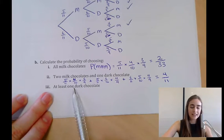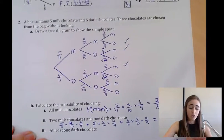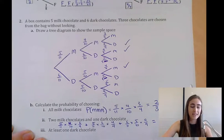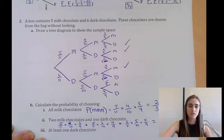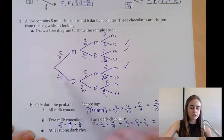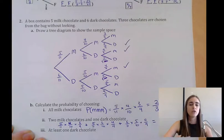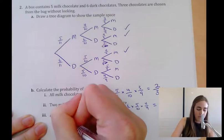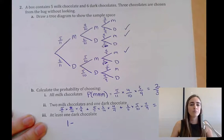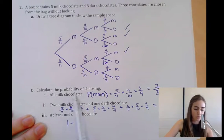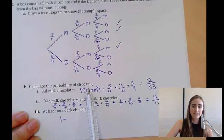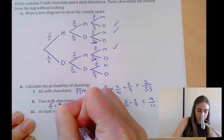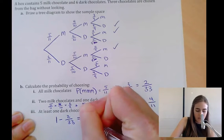Our last question asks for the probability of choosing at least one dark chocolate. This could happen in many ways — one, two, or three dark chocolates — everywhere except the all-milk branch. Instead of calculating every other branch, we use complementary events: P(at least one dark) = 1 − P(no dark) = 1 − P(all milk) = 1 − 2/33 = 31/33.